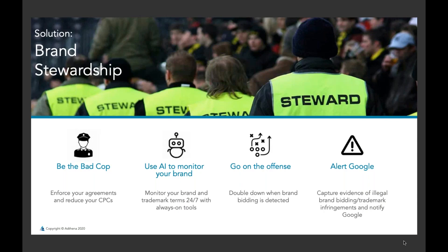With brand protection also comes the need to monitor your affiliates and partnerships — even cross-brand friendly fire could be artificially increasing your CPCs. In order to keep control and stop losing sleep when your CEO calls at 10 p.m. asking why someone is on top of you in the SERP, it's time to be the bad cop. You need to enforce your agreements, keep the receipts, reduce your CPCs through open communication with affiliates, and document evidence along the way. Remember Hanlon's Razor: don't ascribe actions to malice that are easily explained by ignorance.